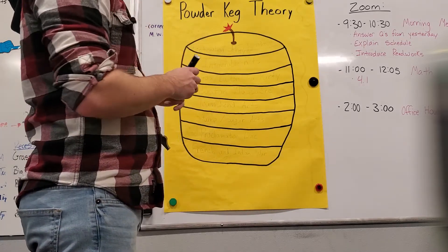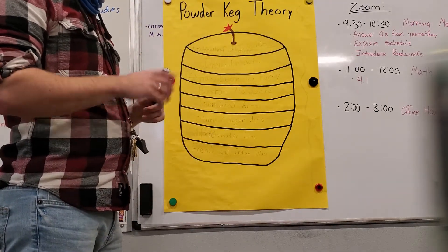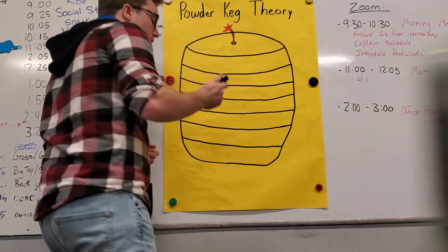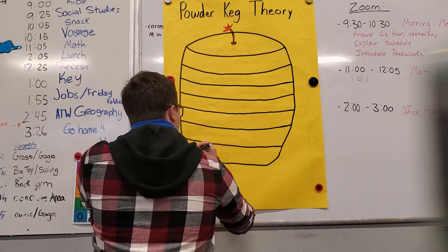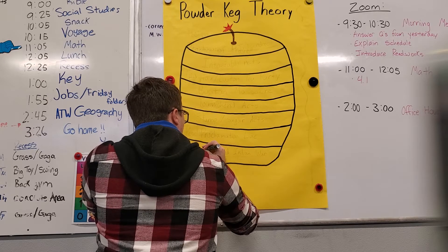So on your page, if you guys are following along, you should have something that looks similar to this. And the bottom thing is the very first thing that happened that was the cause of the Revolutionary War, which was the French and Indian War.